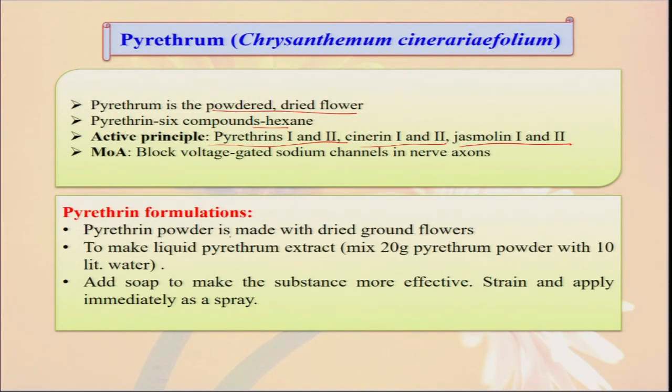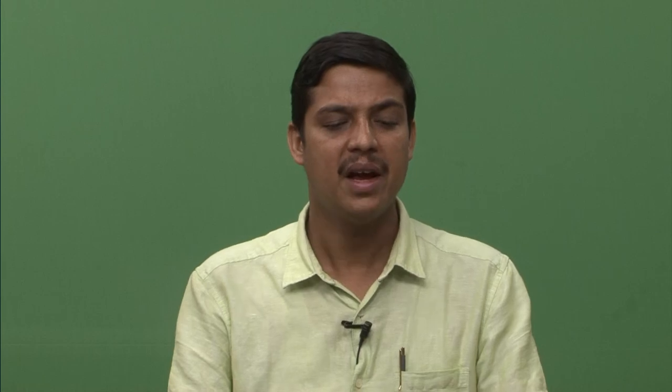Pyrethrum formulation is made from dried flowers and can also be made into liquid or powder by adding a little water and some sticker, and then sprayed in your organic farm. Similarly, nicotine — from tobacco — tobacco is only known to us for preparation of bidi, cigarette, and different types of chewing tobacco, but they also have some beneficial role. They have insecticidal properties due to the presence of nicotine within them. This is an alkaloid from the foliage of the tobacco plant. When we spray this type of nicotine or leaf extract, they have some insecticidal properties.